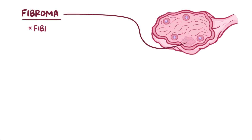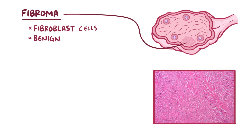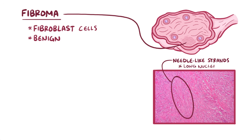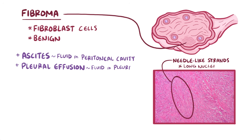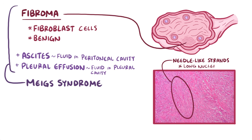The second type of tumor, fibromas, are made of fibroblasts and are benign tumors. Under the microscope, they look like thin, needle-like strands with elongated nuclei that are bundled together. Benign fibromas are often seen in combination with ascites, a fluid buildup in the peritoneal cavity, as well as pleural effusion, a fluid buildup in the pleural cavity. In fact, the clinical triad of a benign ovarian tumor with ascites and a pleural effusion is better known as Meigs syndrome.